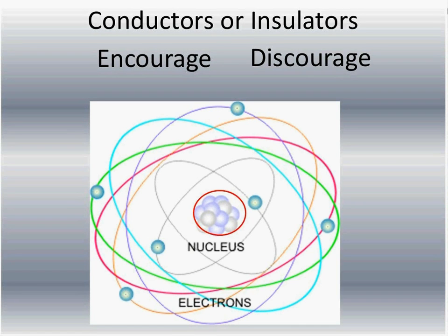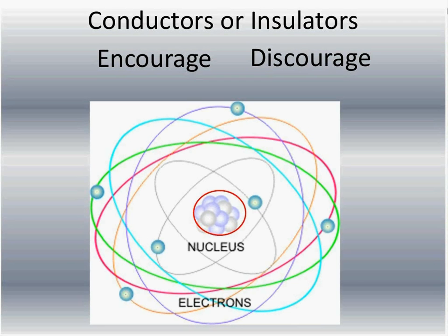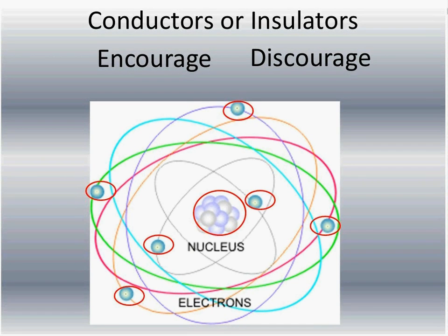Neutrons are neutral particles that basically just give weight to the atom. Protons will be evenly distributed with the electrons that are floating around on the outside. So there'll be an equal number of electrons and protons.